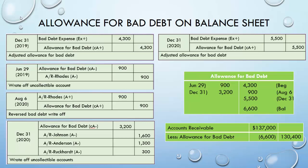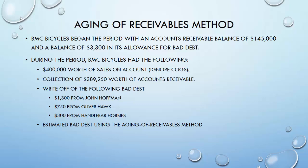When presenting this on financials, just like with accumulated depreciation, you take Accounts Receivable and subtract the contra asset account underneath it. Assuming we have $137,000 in gross receivables and an Allowance for Bad Debt of $6,600, we don't expect to collect $6,600 of that. So the net realizable value — the amount we actually expect to collect — is $130,400.